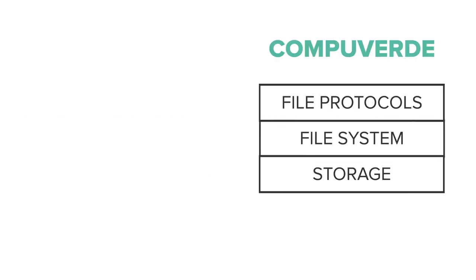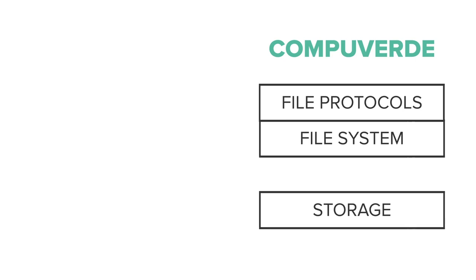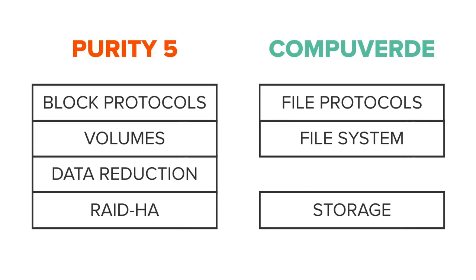The CompuVerd stack included SMB and NFS protocols, a file system, and a storage layer. The storage layer served as a natural cut line, since the deeper layers of Purity are where so much of the magic happens.